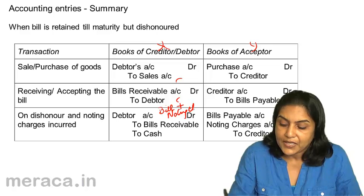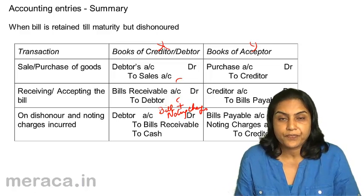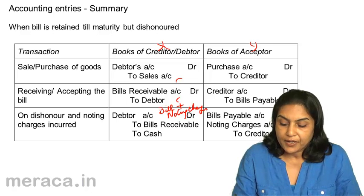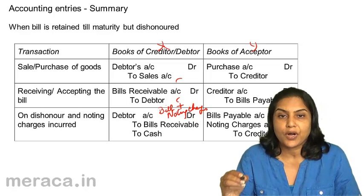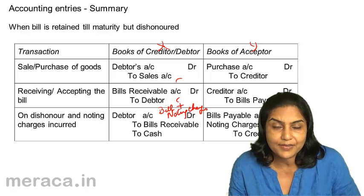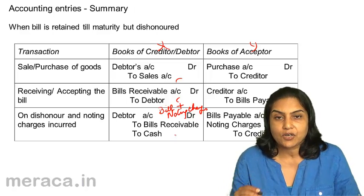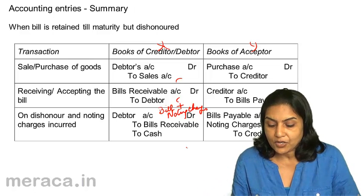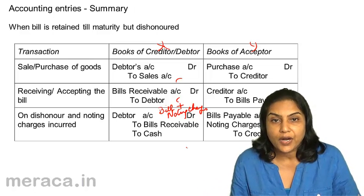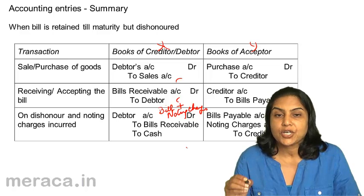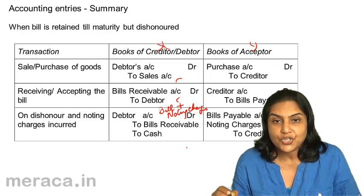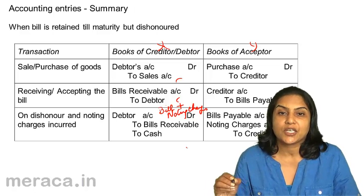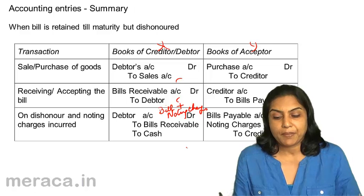The entry in X's books becomes: Y's account debit for 10,200 — assuming 200 is the noting charge and 10,000 is the value of the bill. To bills receivable: 10,000. To cash: 200, being the cash paid for registering the dishonour — the noting charges paid to the notary public.